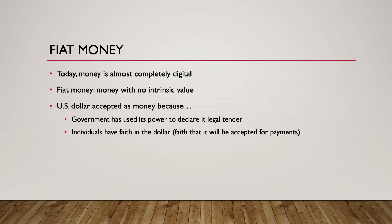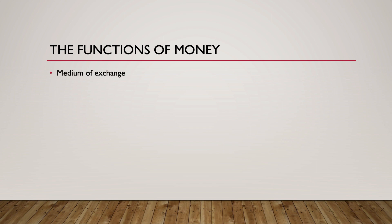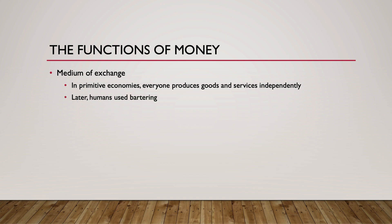It is the power of the government and the faith of individuals in society that gives our dollar any value at all. Money has three primary functions in our economic system. First, money serves as a medium of exchange. In primitive economies, individuals must produce all of the things they need to survive on their own, much like animals in nature. However, unlike animals in nature, humans learned to exchange goods and services directly with one another through bartering.